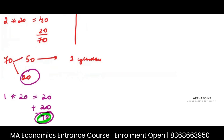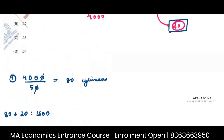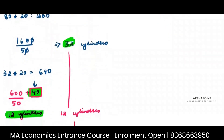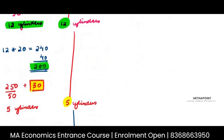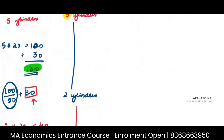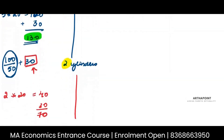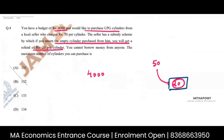How many cylinders could I buy in total? 80 plus 32 is 112, plus 12 is 124, plus 5 is 129, plus 2 is 131, plus 1 is 132. So the answer to this question is B — I was able to buy 132 cylinders.